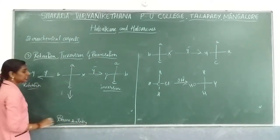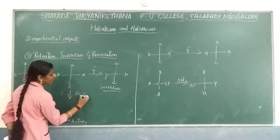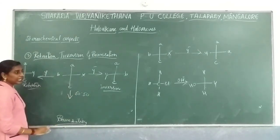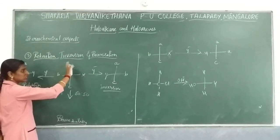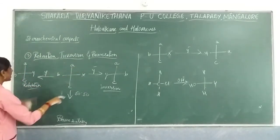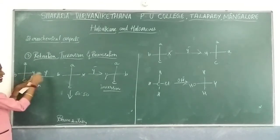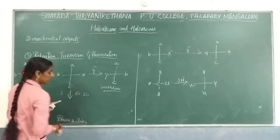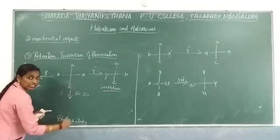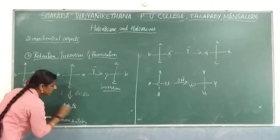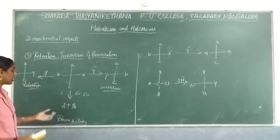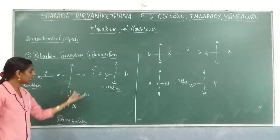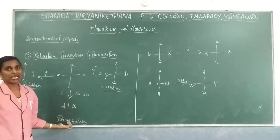Racemization means you are going to get 50% of one kind of product and 50% of another kind. When dextrorotation occurs you get one kind of product, and when levorotation occurs you get the opposite kind. Equal concentrations of dextrorotatory and levorotatory products are obtained — that is considered racemization.